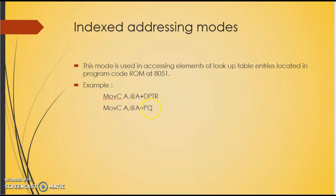In indexed addressing mode, DPTR and PC are 16-bit registers. The addition of A and DPTR (or PC) results in a new address which is used as the source address to fetch data from ROM. This covers all five addressing modes of the 8051. I hope you now have a clear understanding. Thank you and best of luck.